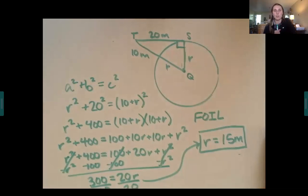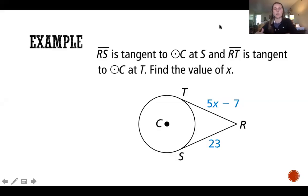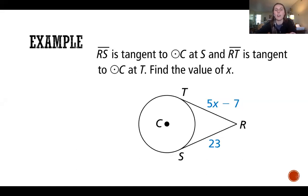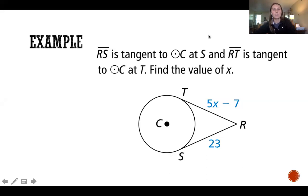Let's do one more example. This is going to be our last example, and it's honestly probably one of the easier problems in this section. Segment RS is tangent to circle C at point S, and segment RT is tangent to circle C at T. We're going to find the value of X using that second theorem. Go ahead, pause the video, write down this problem.